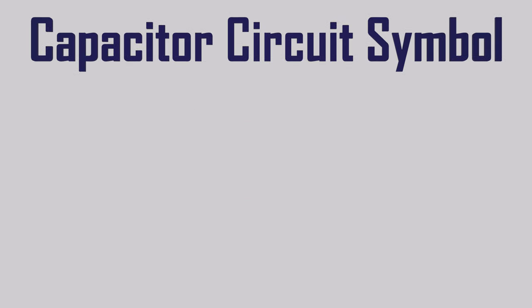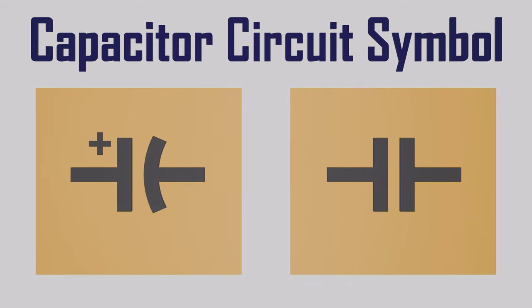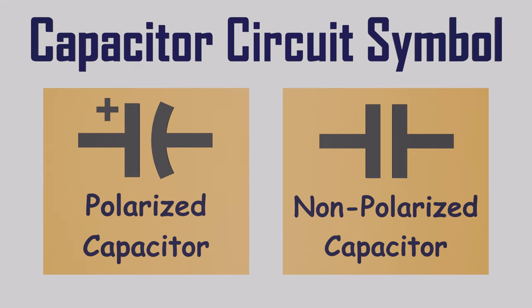The capacitor symbol has two parallel lines, either flat or curved, representing how the capacitor is made. A curved line indicates it's polarized, likely an electrolytic capacitor. If the symbol lacks polarity indication, it's likely a non-polar capacitor.